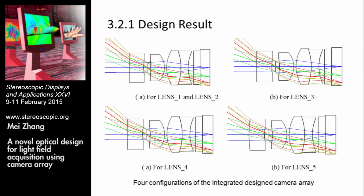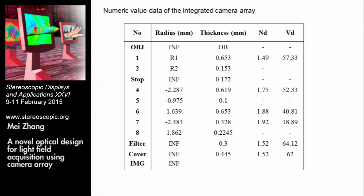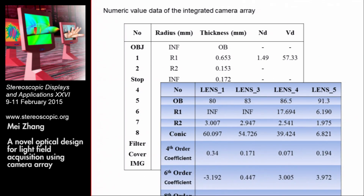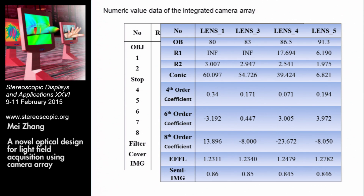Here are the design results. The first configuration is used for camera lens one and lens two, because the objective distances for these two cameras are very close. We can see that only the first lens has different parameters while others remain the same. The numeric data shows OB representing objective distance, and R1 and R2 representing the curvature of the first lens. The four configurations have different values. The fourth, sixth, and eighth-order aspheric coefficients are used, which are not difficult to fabricate in plastic. The image sizes from the last row are very close to each other across all configurations.